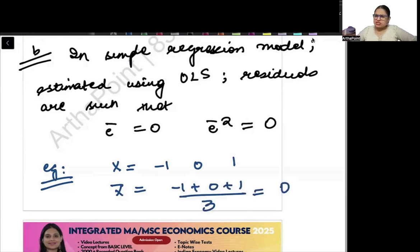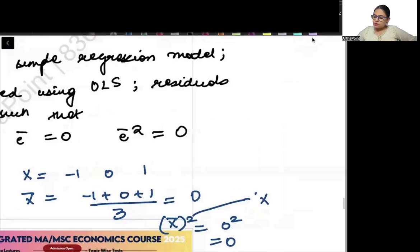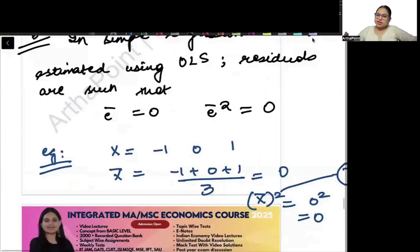If mean is 0, even if you square the mean, it will remain 0 only. So mean of X bar will also be 0. Basically, E bar squared, mean squared, the square of the mean will be 0 if mean is 0.